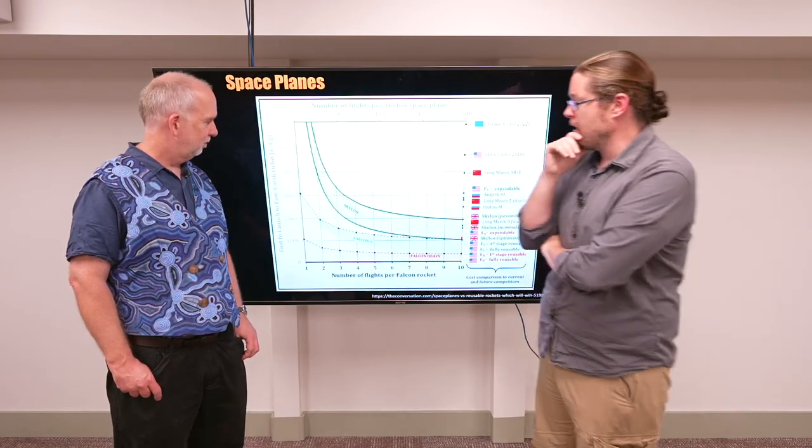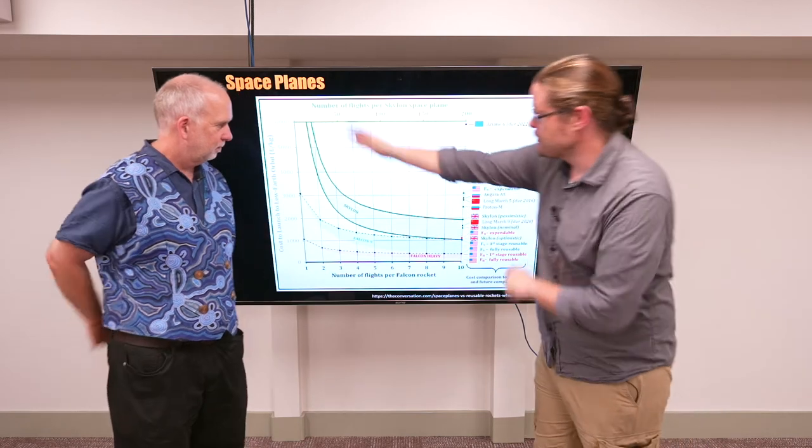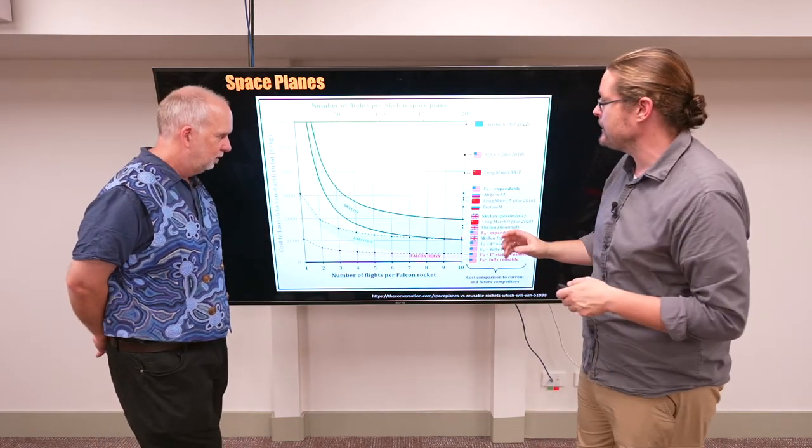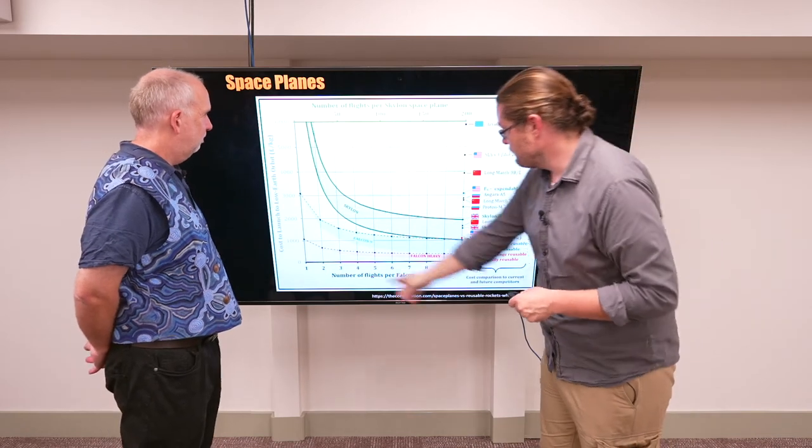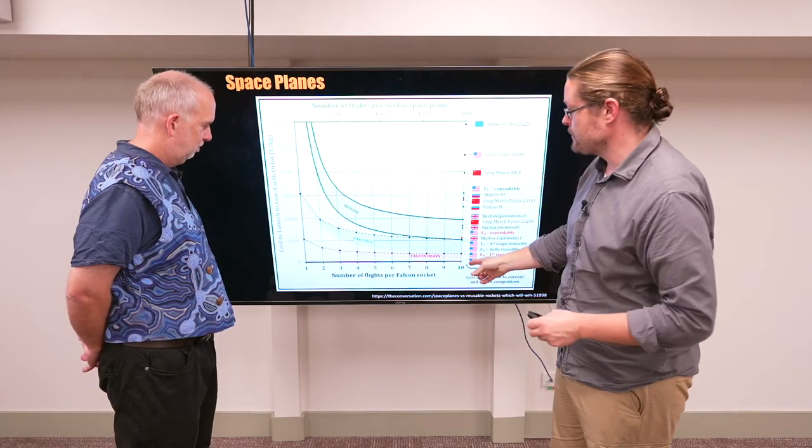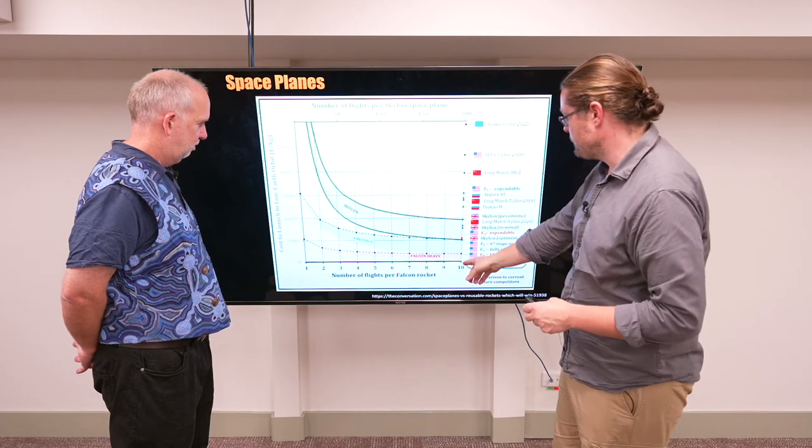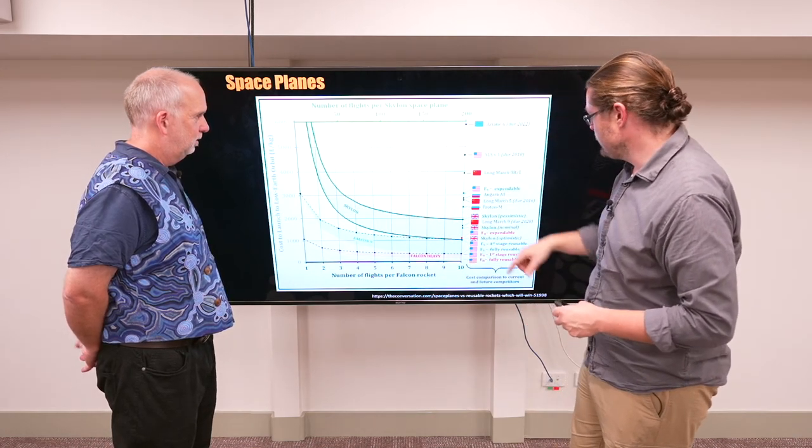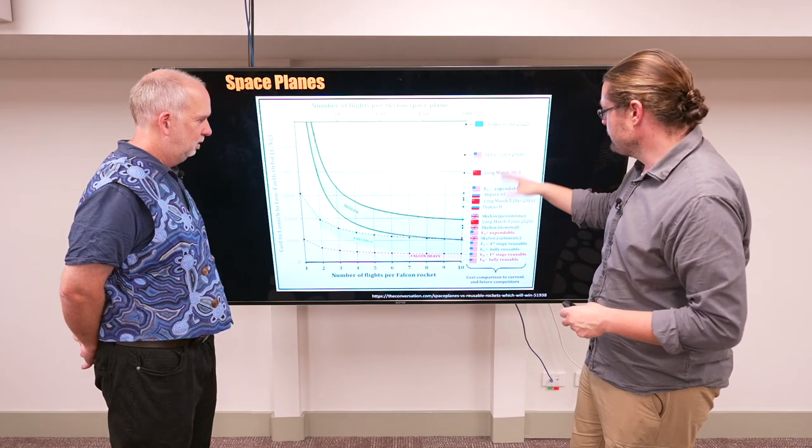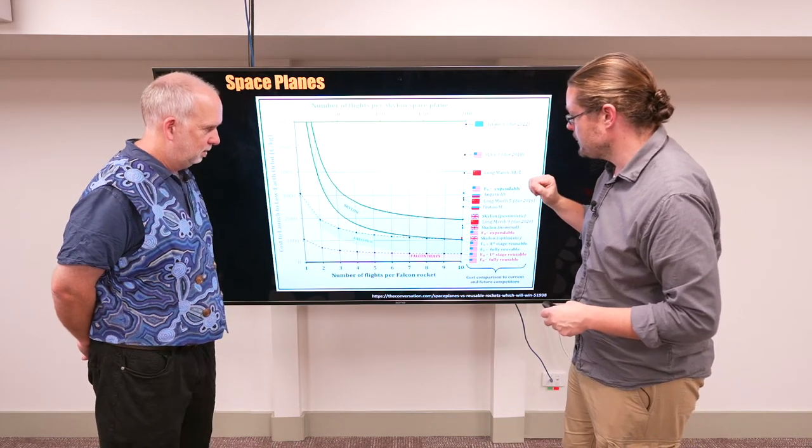And in fact, people have looked at what would this cost be. This is just one proposed mission of the Skylon space plane. So this is how many times it would fly versus flights of an equivalent rocket. So assuming a Falcon SpaceX rocket can go 10 times, they can go 200 times. We can look at different other countries' rockets, Falcon 9, some of the Chinese and European rockets.